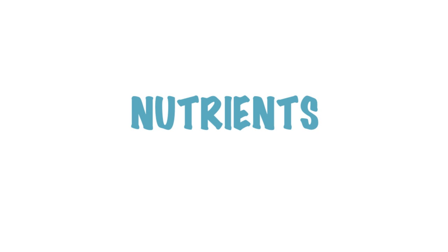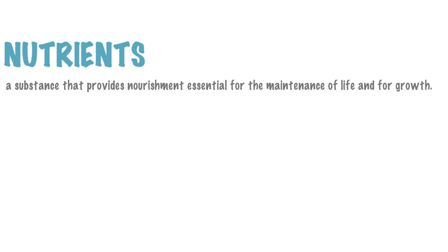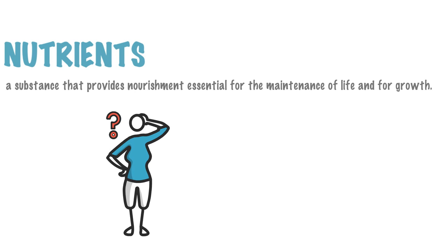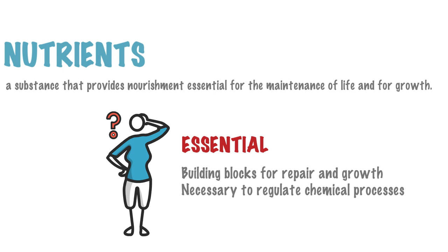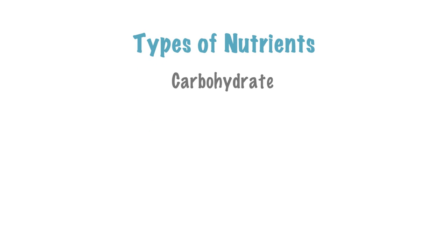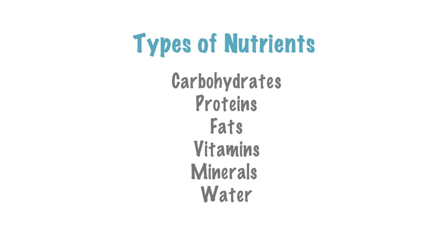Rice alone, eggs alone or dal alone cannot help our body perform all the necessary functions. Now let's see what these components are. These different components contained in various ingredients which comprise a particular food item are simply known as nutrients. Nutrients are imperative for the proper functioning of the human body. Nutrients are compounds that are essential to life and health, providing us with energy. They are also the building blocks for repair and growth, apart from being the substances necessary to regulate various chemical processes occurring in the body. The types of nutrients are carbohydrates, proteins, fats, vitamins, minerals and water. Water is defined as an essential nutrient because it is required in amounts that exceed the body's ability to produce it. All biochemical reactions occur in water.